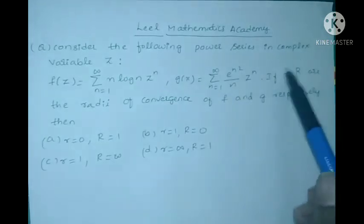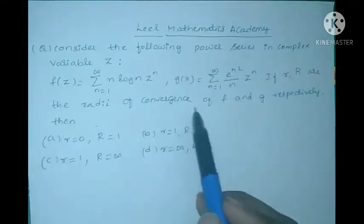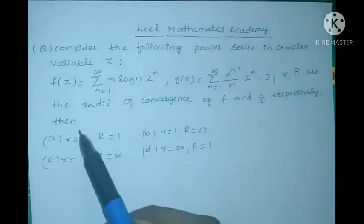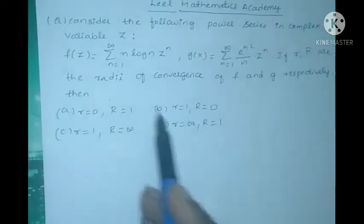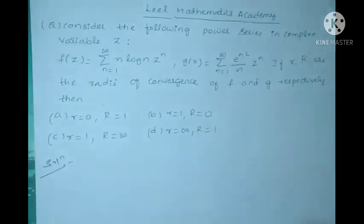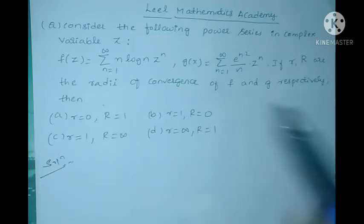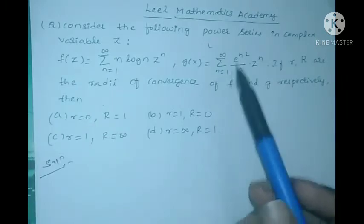If r (small r) and R (capital R) are the radius of convergence of f and g respectively, then there are 4 options given. I already discussed Power Series in my previous video, solving two problems about Power Series of complex variable Z.